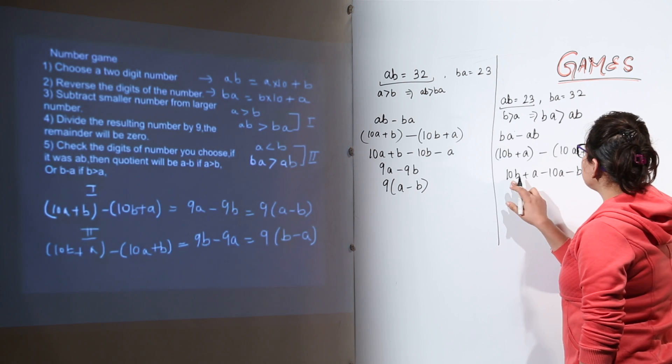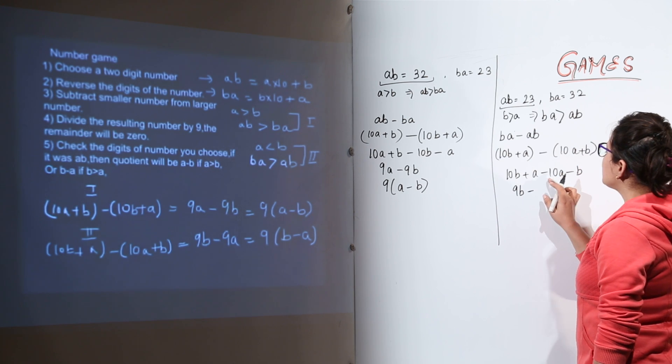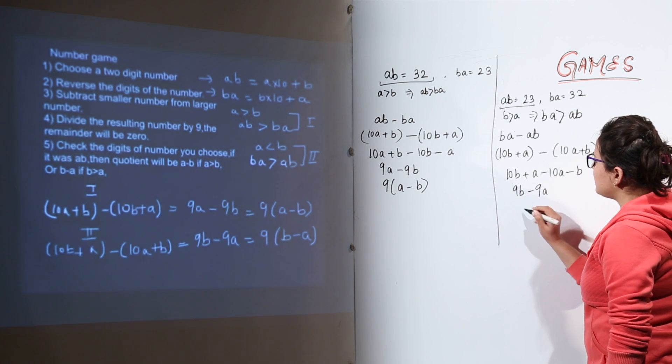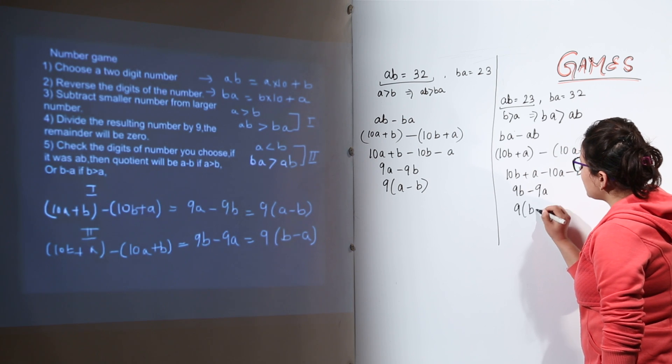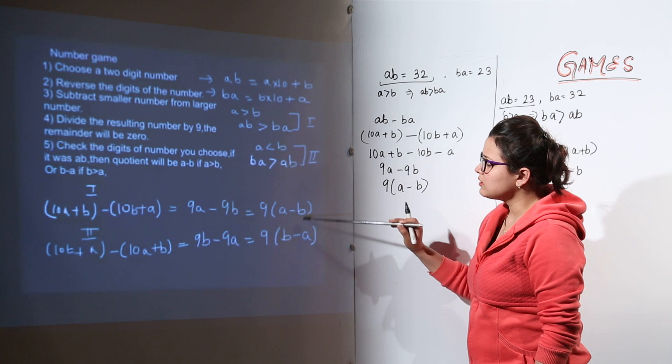We are getting 10B minus B equal to 9B. Why? Because minus 10A plus A is going to give us minus 9A. So we get 9 as common and B minus A. So that is the case in both the cases.